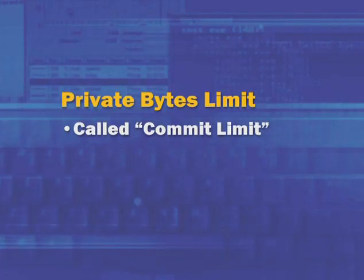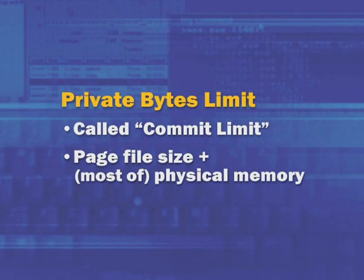Had we not terminated Test Limit, either it would run out of virtual address space — unlikely on 64-bit Windows, where a 64-bit process could theoretically grow to 8 terabytes — or we would have hit the system commit limit. The system commit limit is the total amount of private virtual memory across all processes and the OS that the system can track at any one time. It's a function of two sizes: the size of the paging files on your system, plus most of the physical memory.